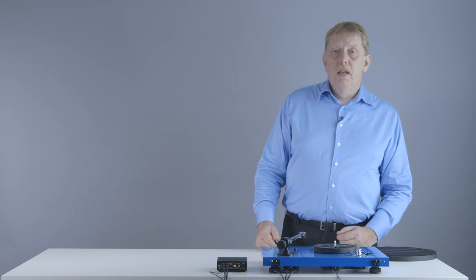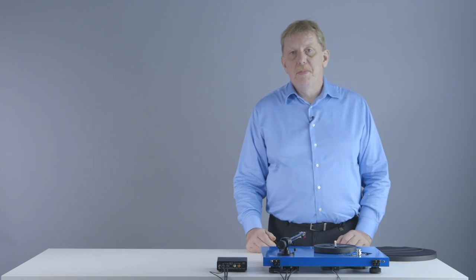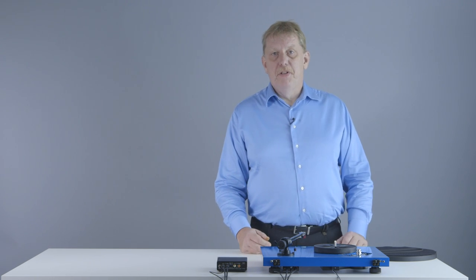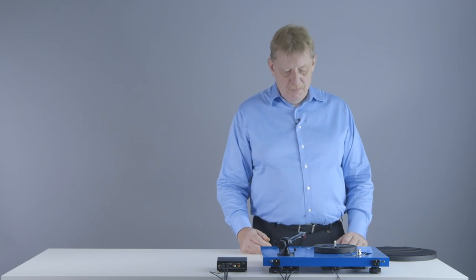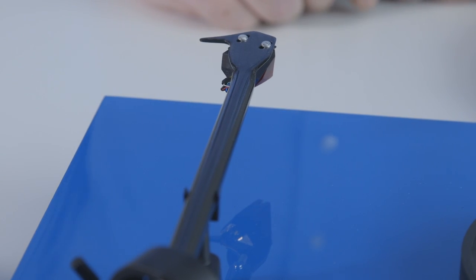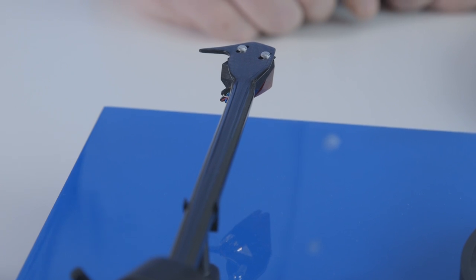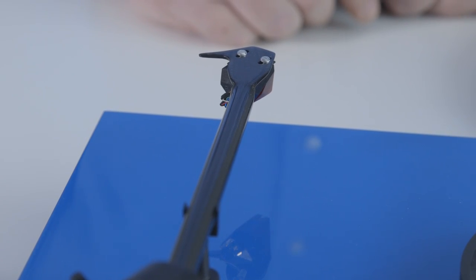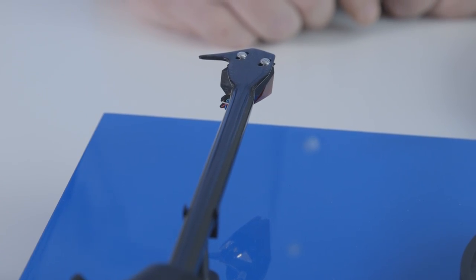Carbon fiber is a very rigid, low mass material ideal for use in tonearm tubes. Combined with the conical shape of our tonearms, it effectively makes our tonearms free of unwanted resonances that degrade the performance of conventional tonearms.